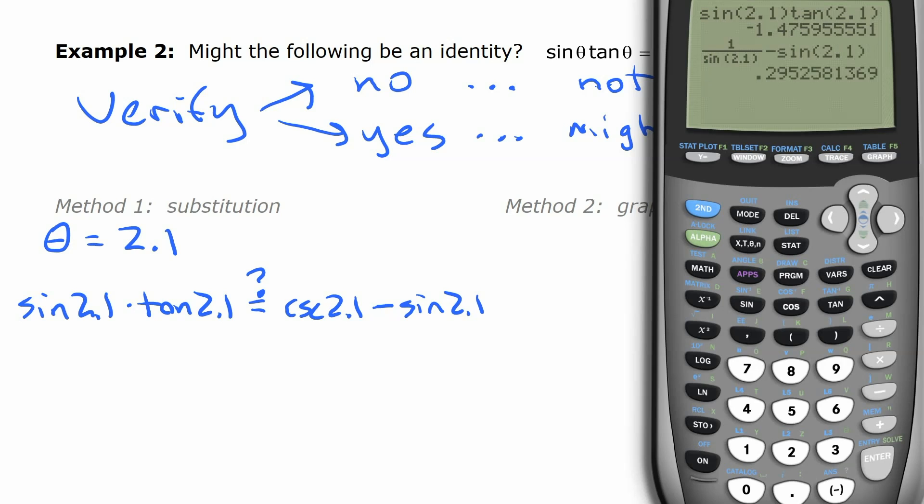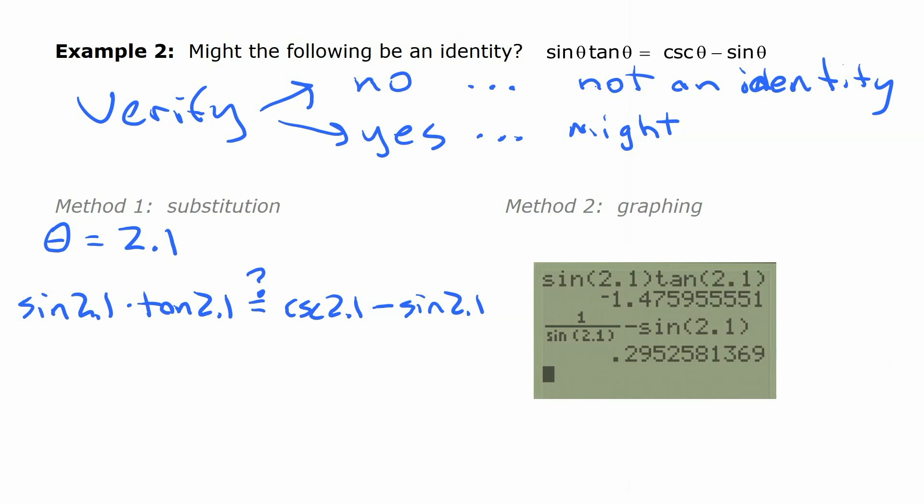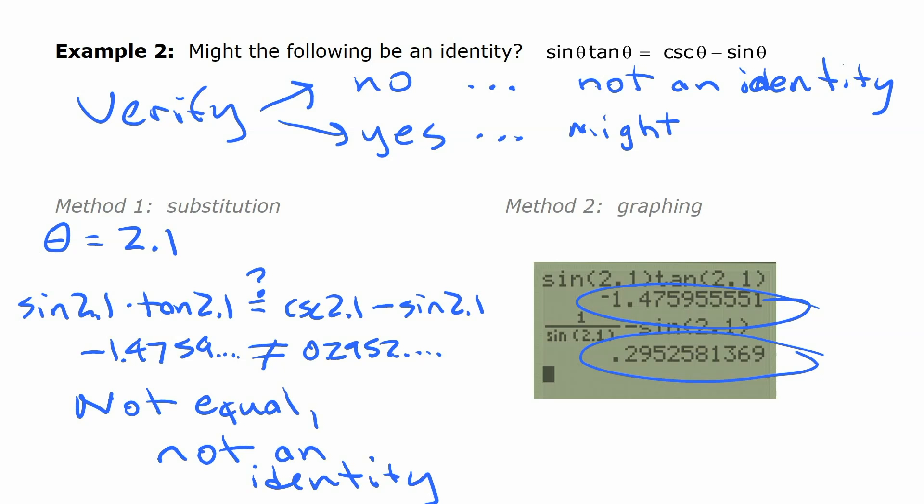Now, that value is a different value than that. Assuming I put everything in here correctly, which it looks like I did, those two values being different. So we have roughly negative 1.4759. It's definitely not equal to 0.2952, right? So the fact that an arbitrary value we picked doesn't work, that thing can't be an identity because this is a valid value for that variable and it doesn't work. The two sides are not equal. So it's not an identity.